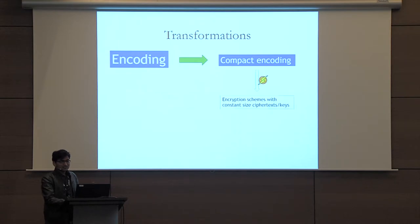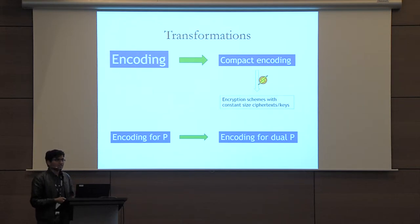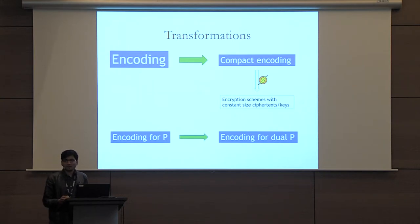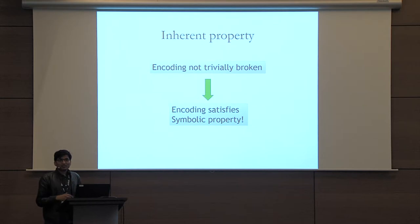These compact encodings then directly give encryption schemes with constant-sized ciphertext or keys. We also show how to convert an encoding for a predicate P into an encoding for the dual predicate — so, for example, if there is an encoding for CP-ABE that satisfies the symbolic property, then you can get an encoding for KP-ABE that satisfies the symbolic property as well. Finally, we give strong evidence that our property is inherent to the notion of encodings by showing that if an encoding is not broken in a trivial way, the encoding satisfies the symbolic property.